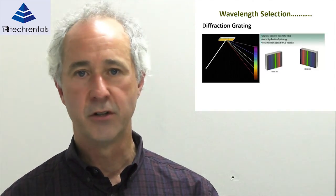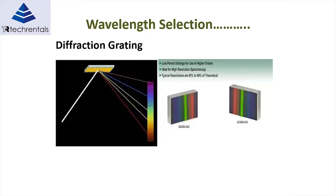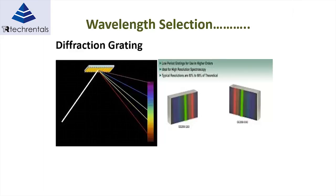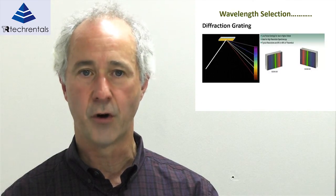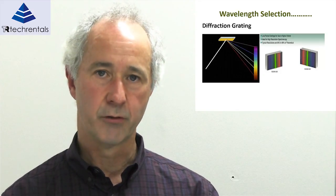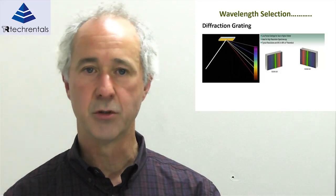A diffraction grating is what is used to break up the light — it is very similar to a CD or DVD. If you hold a CD up in the light, you see a rainbow effect on the face. That's simply how a diffraction grating works: it's a glass with many fine parallel lines cut into it, and when light reflects off the grating it is broken up into its different wavelengths.